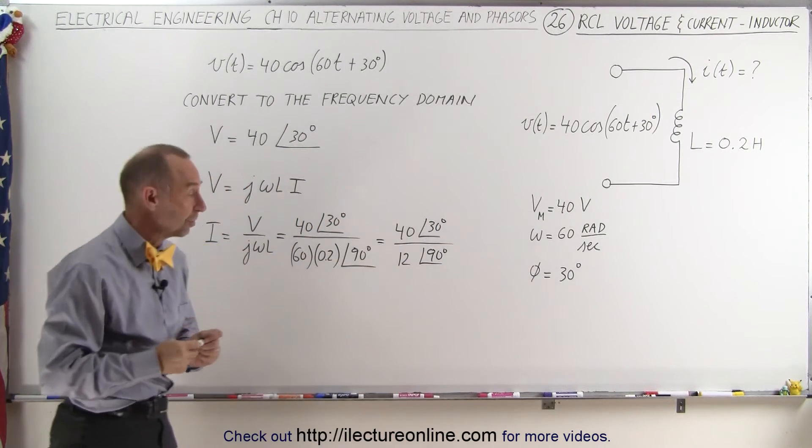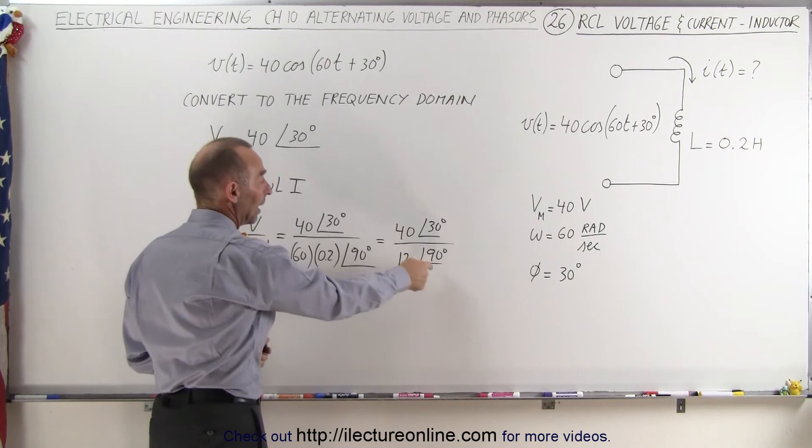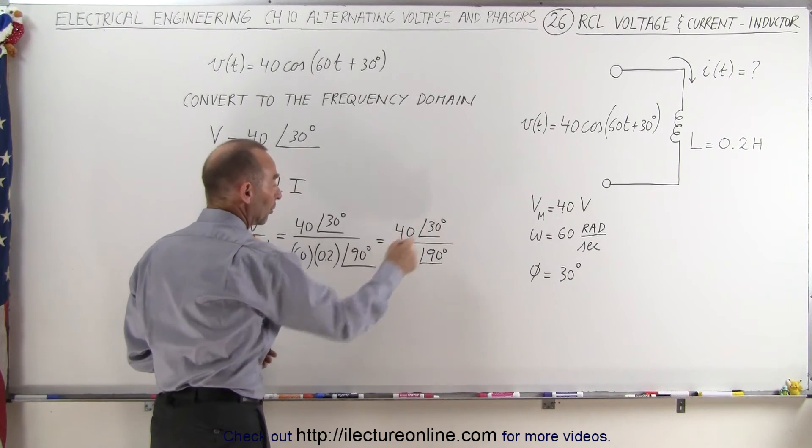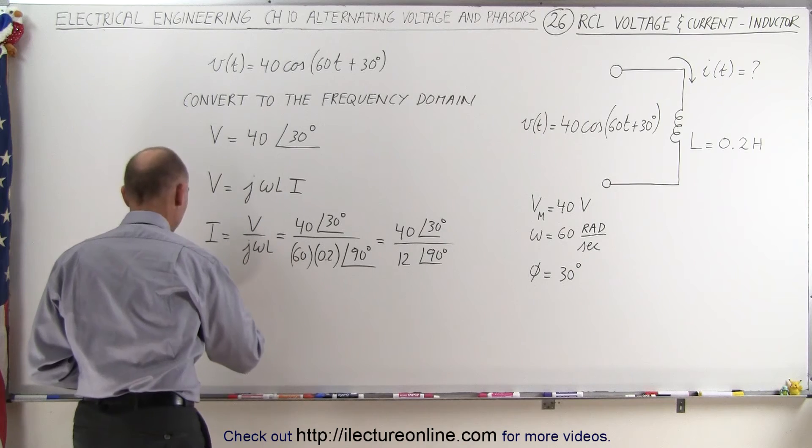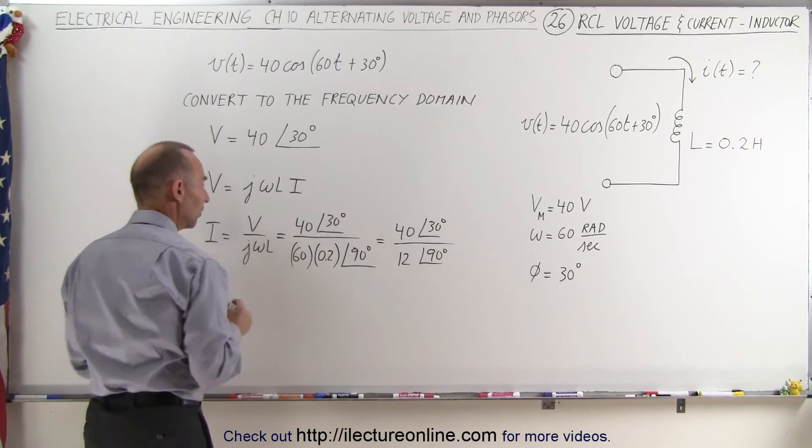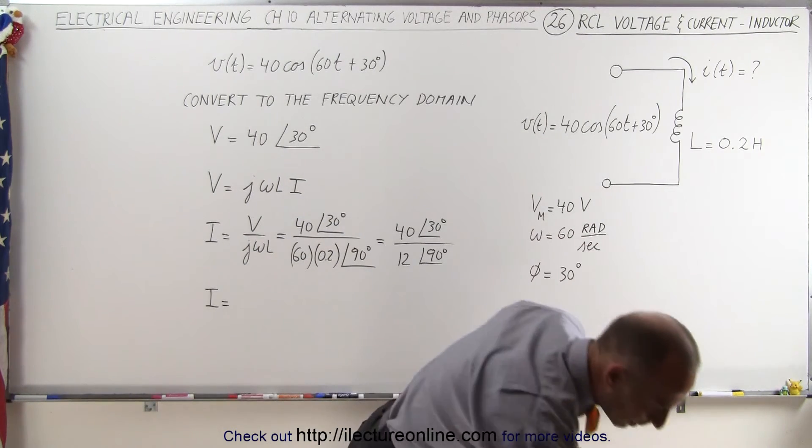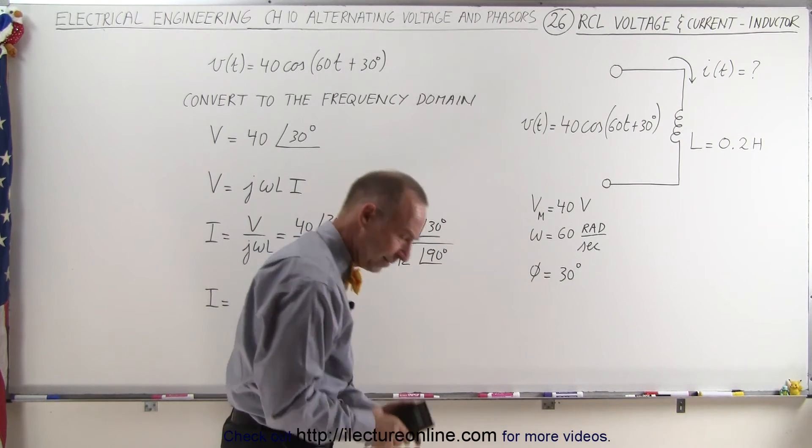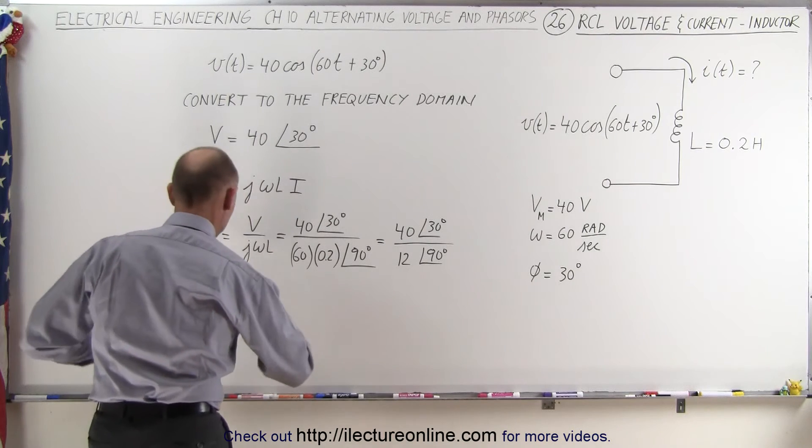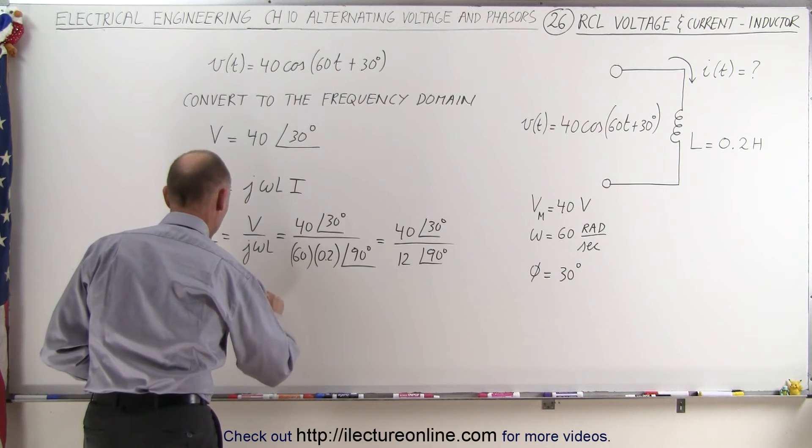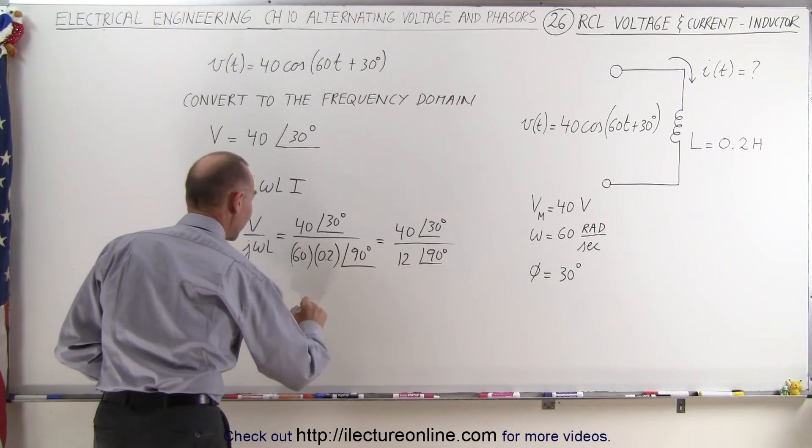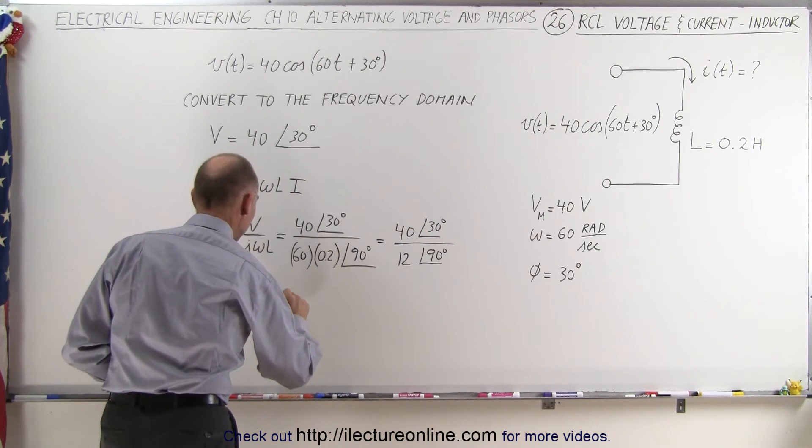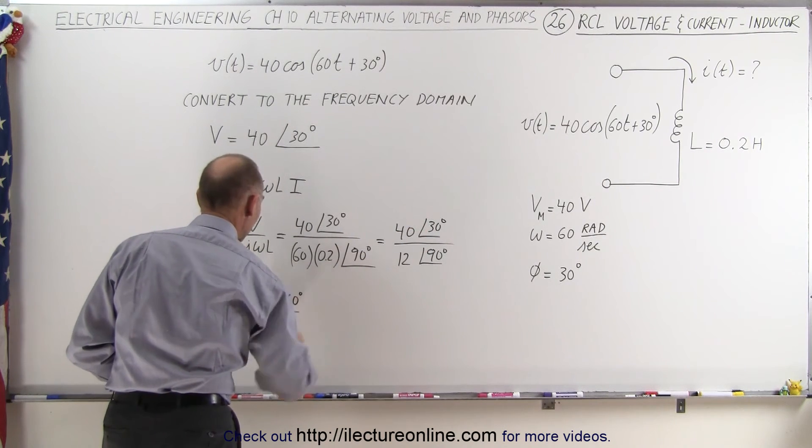Now, this is an easy calculation, we simply divide the amplitudes, and we subtract the 90 degrees from the 30 degrees, so this becomes equal to I in the frequency domain. Let's see, 40 divided by 12, I believe that's 3.33. That's equal to 3.33 with a phase angle of 30 minus 90, which would be minus 60 degrees.